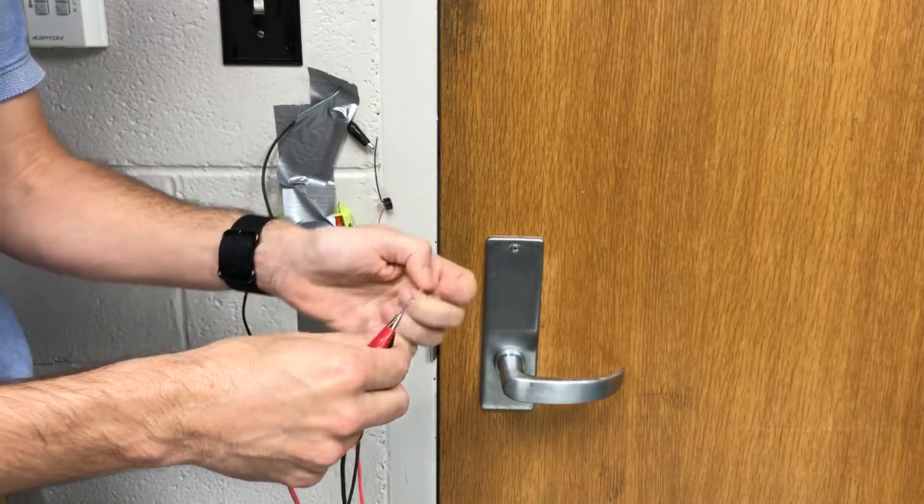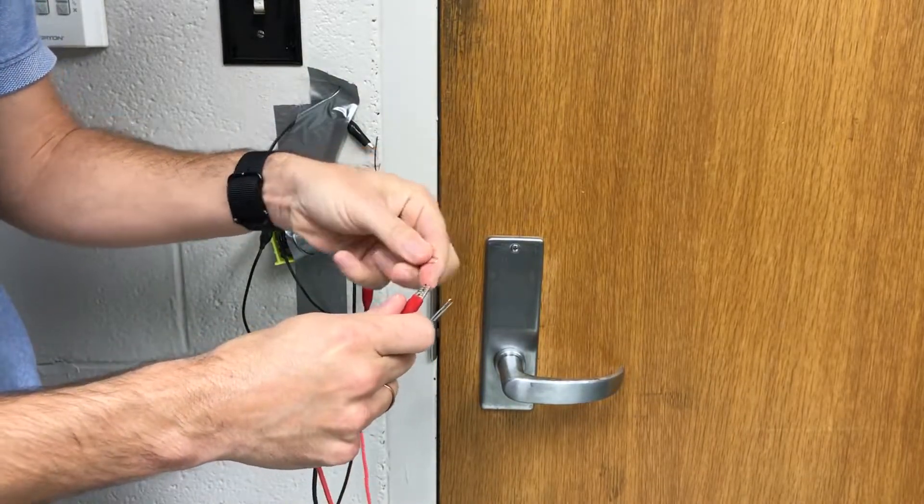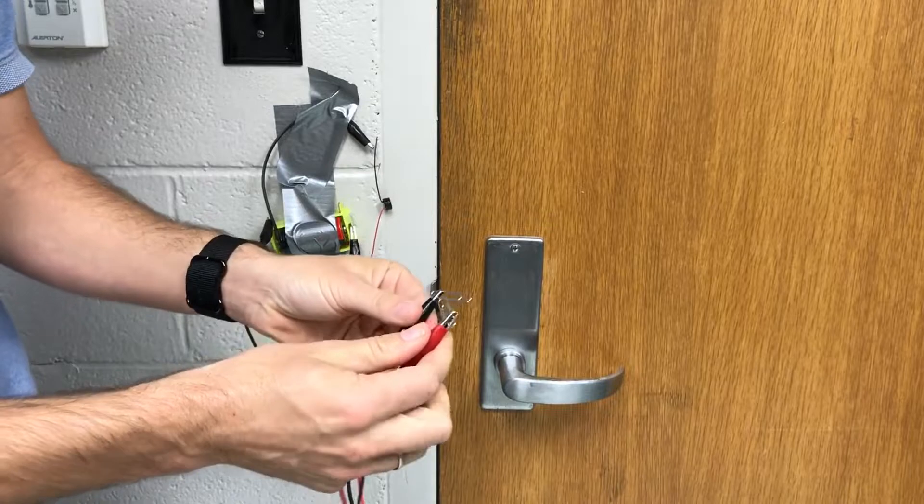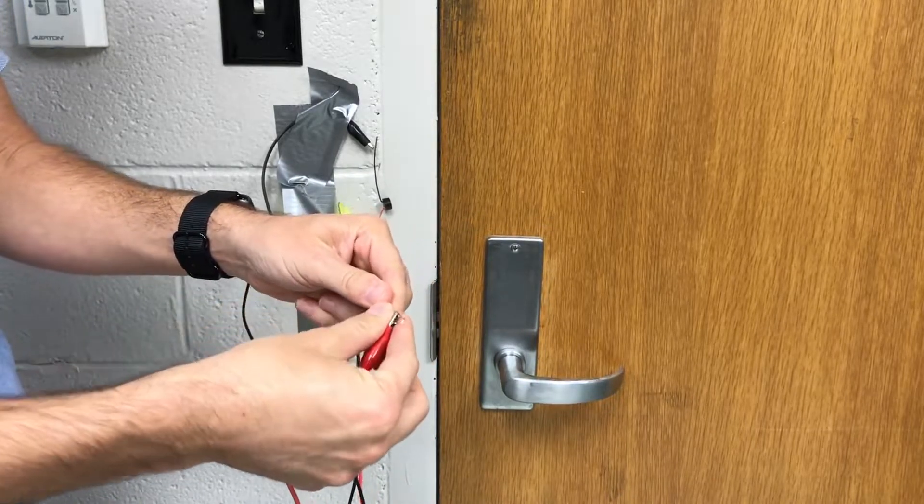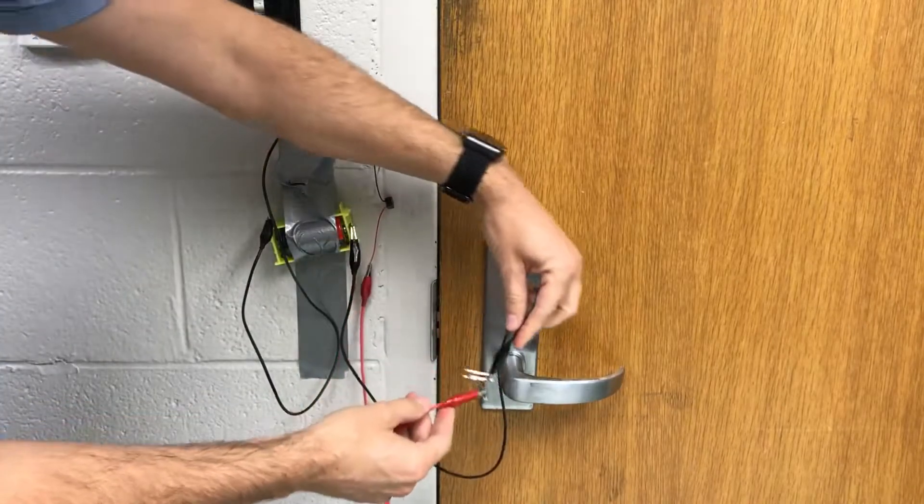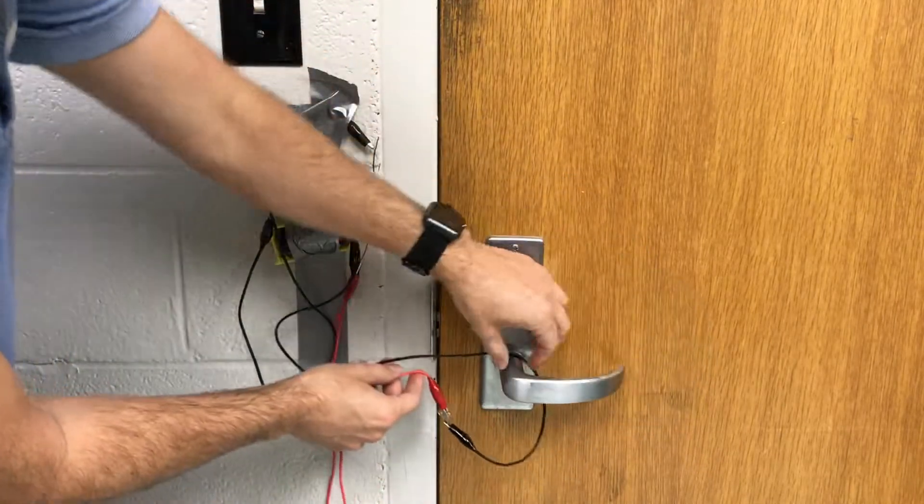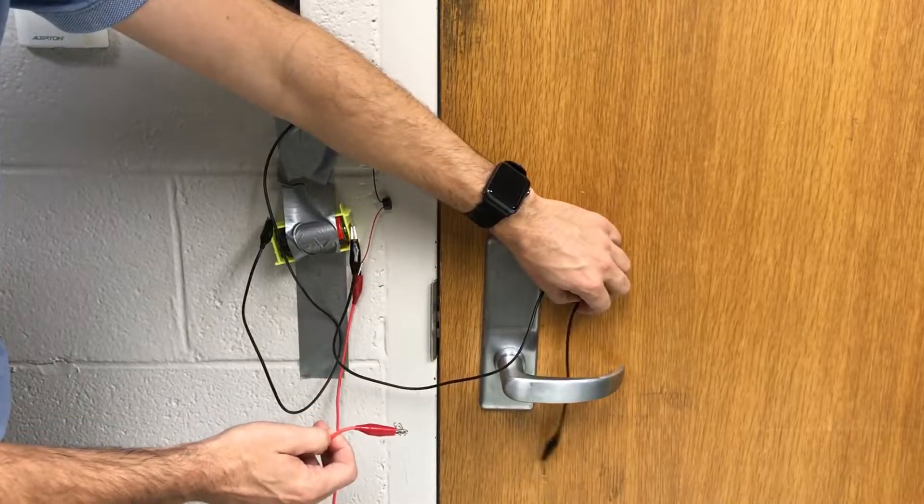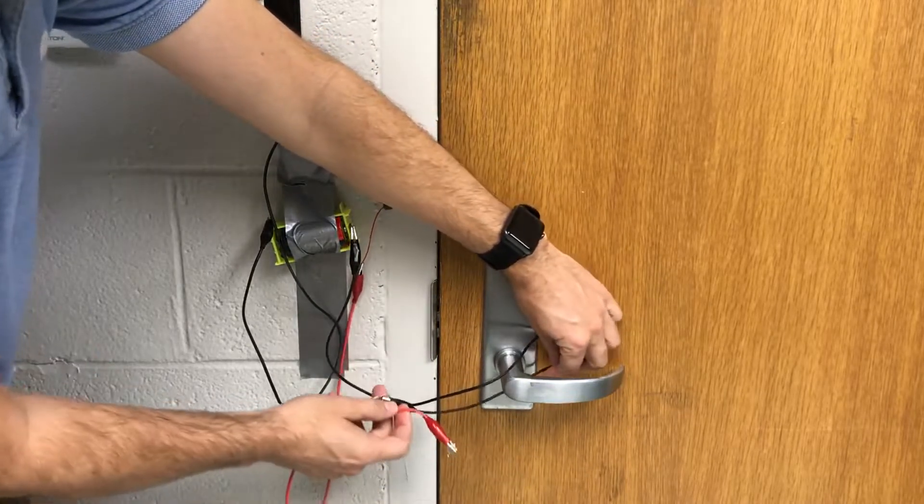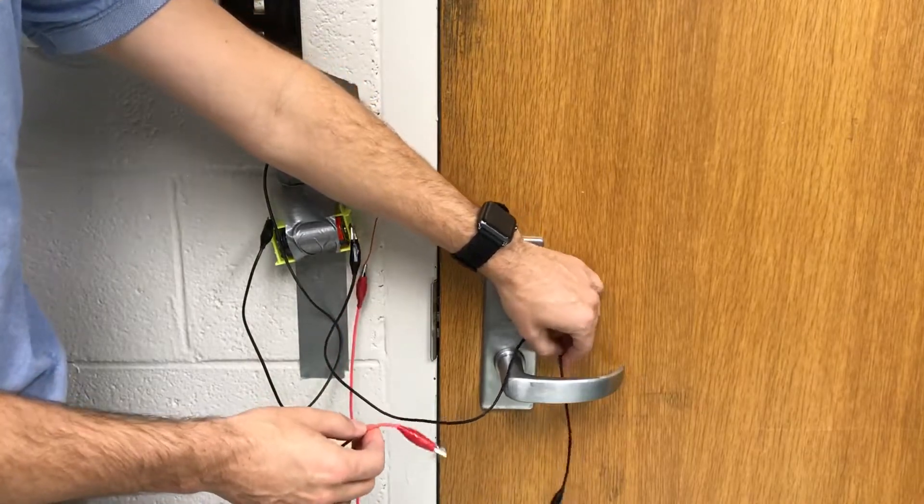I attach the paperclips like this. If I touch these together, it's on. If they're broken apart, it's off. When I open the door, it turns off, but that's not what I want.